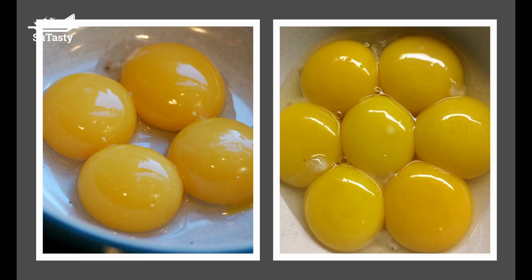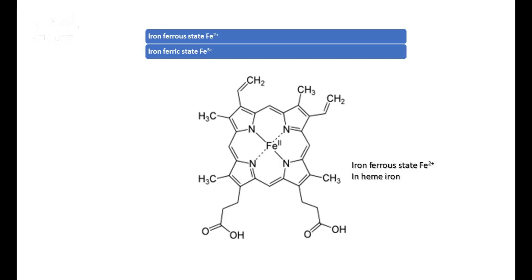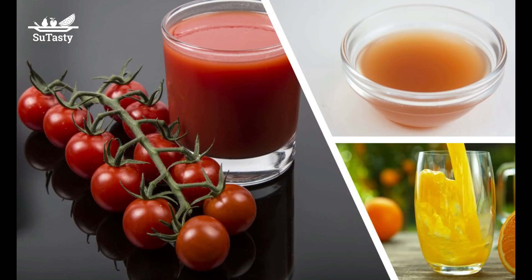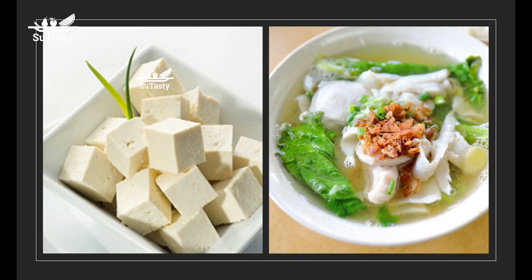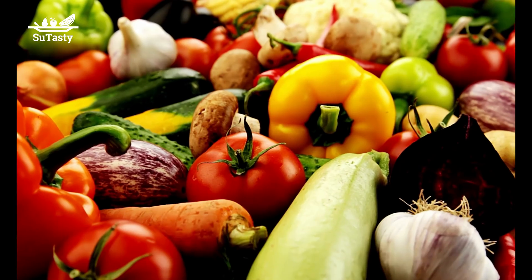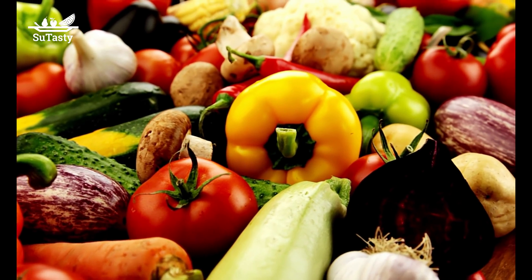Non-heme iron is the iron in plant-origin foods. Interestingly, egg yolks have mostly non-heme iron. Usually, heme iron can be absorbed more readily than non-heme iron. Iron absorption also depends on the existence and amount of other substances which may enhance or hinder the absorption of non-heme iron. The presence of heme iron enhances the absorption of non-heme iron.